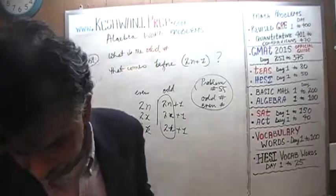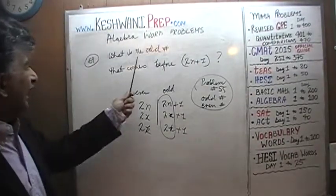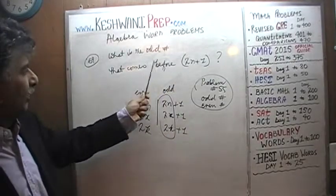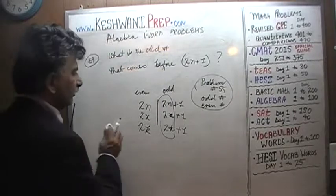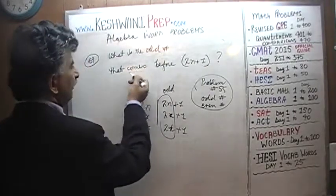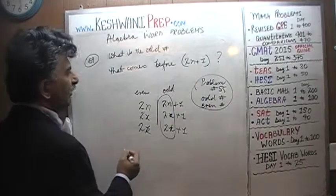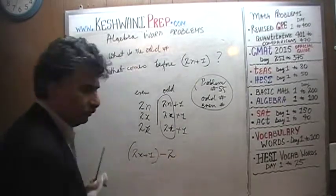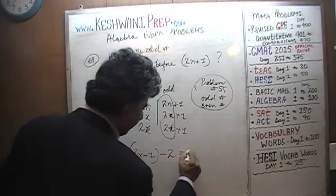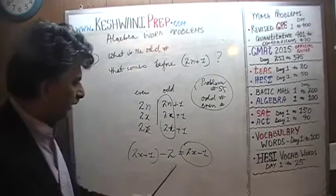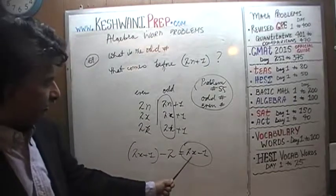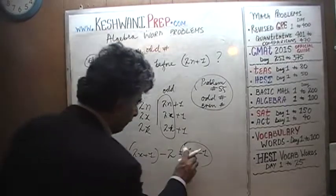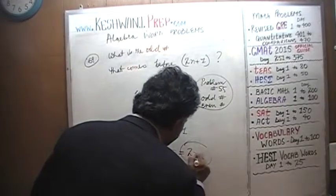That's the starting point. We are being asked to find the odd number that comes before 2x plus 1. The one that comes before it is going to be 2 less than that — it's simply 2x plus 1 minus 2, which gives us 2x minus 1. This quantity is odd because 2x is even, and an even number minus 1 is an odd number. So 2x minus 1 is our answer.